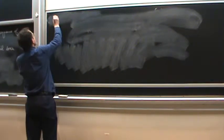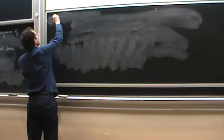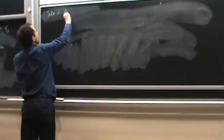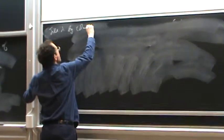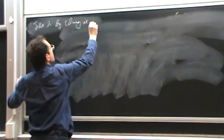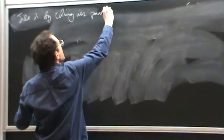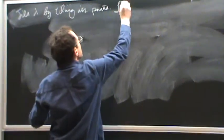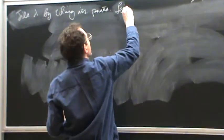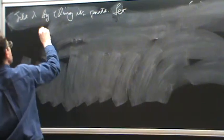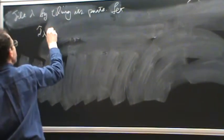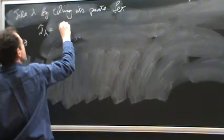So, tile lambda by tiling its parts. And we're going to want notation for that, so we're going to let script T lambda be the set of such tilings.